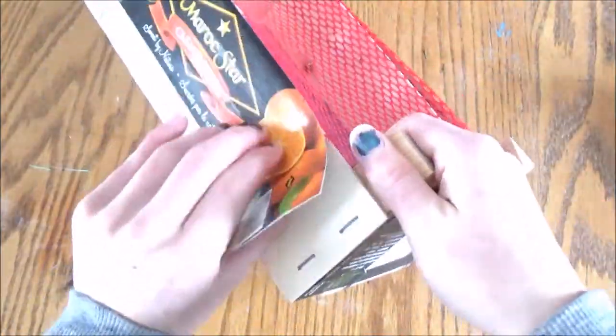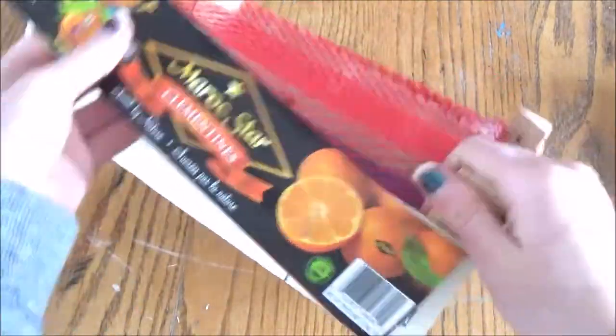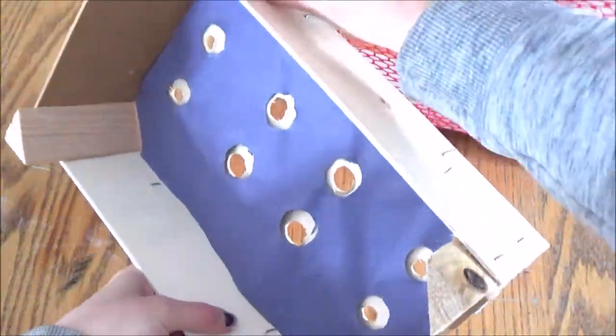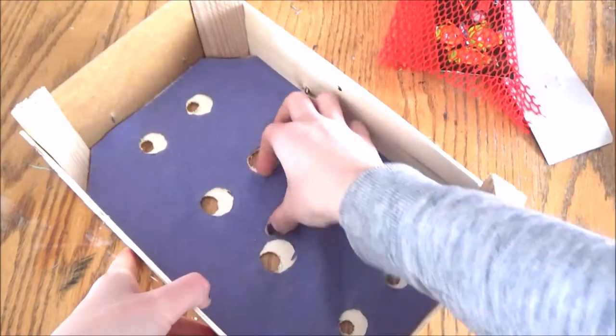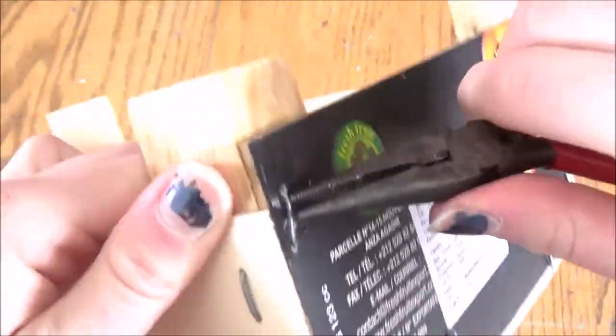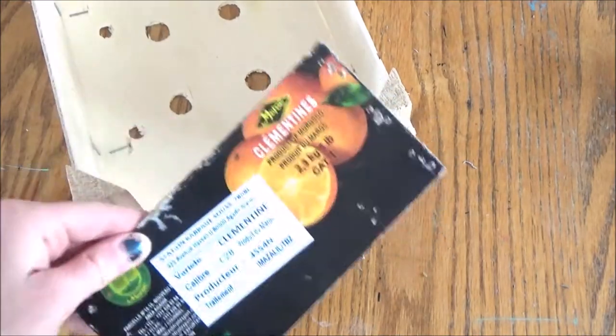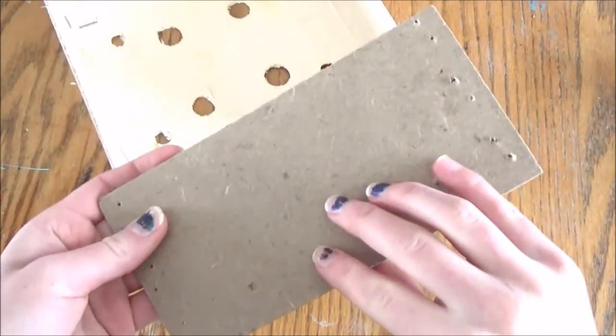The first thing you're going to do is remove all the paper and stuff from the orange crate. After you do that you're going to need to remove one of the short sides, and to do this you're going to want to pull off all the staples. It can be a little tricky but it usually does come off pretty well.